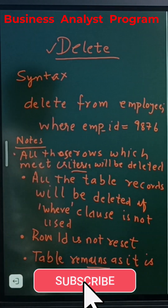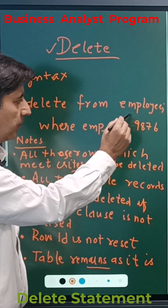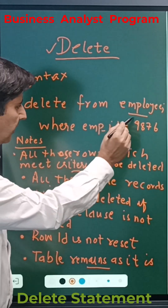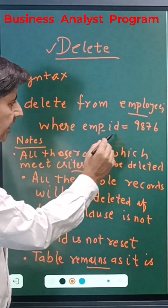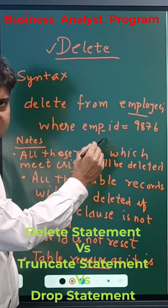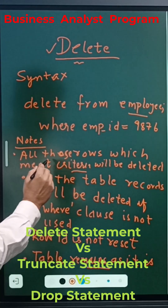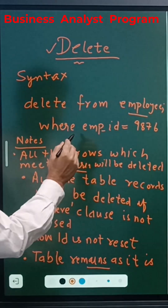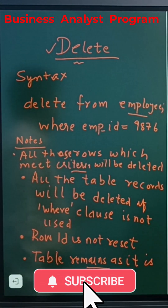The delete statement. The syntax of the delete statement is: DELETE FROM employee, where employee is the name of the table. You can also use DELETE FROM table_name WHERE condition — for example, DELETE FROM employee WHERE emp_id = 9876. All rows which meet the WHERE criteria will be deleted; in this case, the row with emp_id equal to 9876 will be deleted.